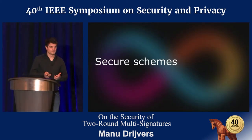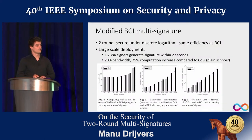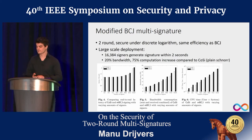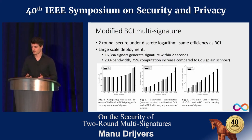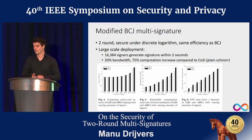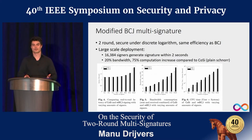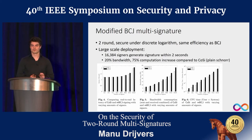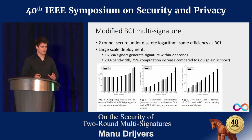On the positive side, we introduce a slight modification of the Bagherzandi et al. scheme that does address the issue, giving a two-round multi-signature scheme secure under the discrete log assumption. It's slightly more expensive than plain Schnorr or CoSi, but in our implementation, 16,000 signers can jointly sign a message in under two seconds — with a 75% increase in computation and slight increase in bandwidth compared to CoSi — still very efficient and scalable.